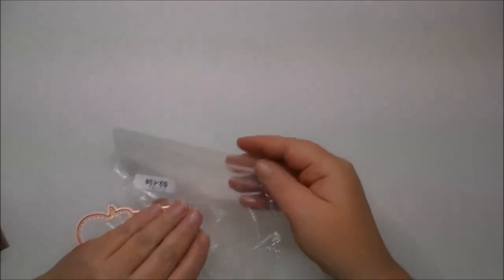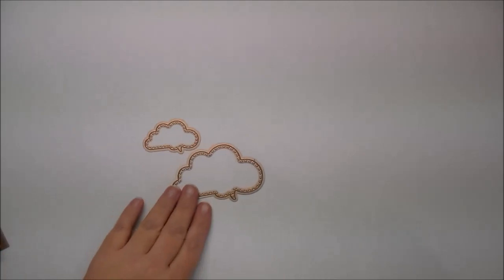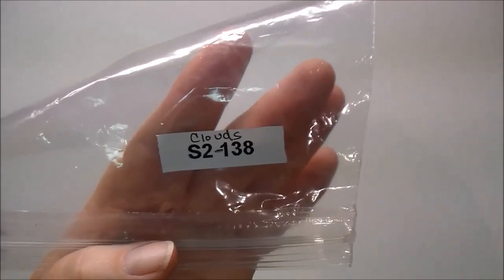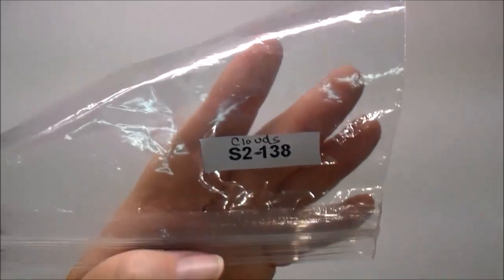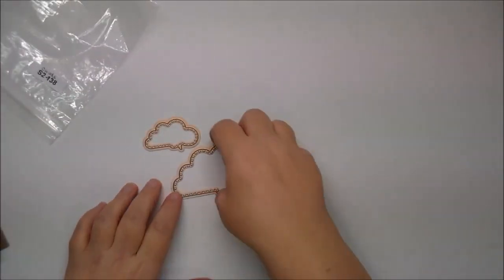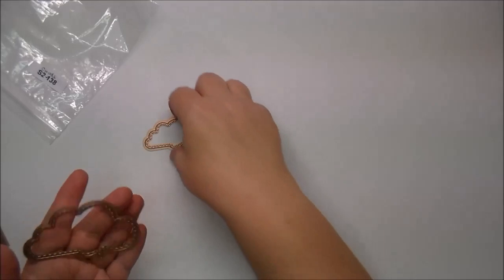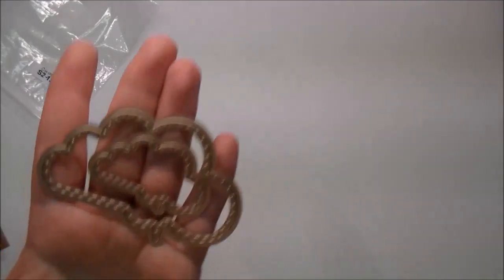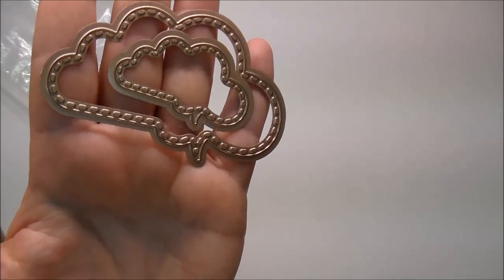And I also have some of the Spellbinder Delights. I have here these are called Conversation Bubble 4. So you get two of those. And they're little clouds or cloud bubbles. And they're S2138. And as you can see, let me hold it up a little closer. They have a stitched edge around them. Super cute. There's two in there.